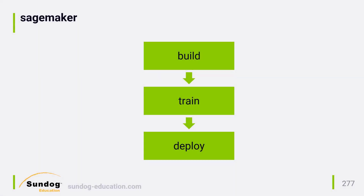Using SageMaker involves three steps: building your model, training your model, and deploying your model. Let's start with building.